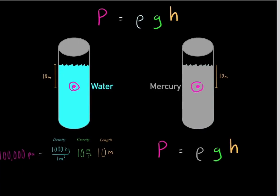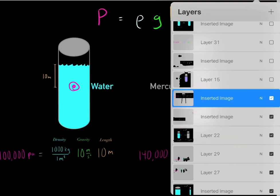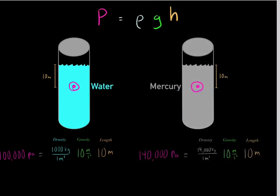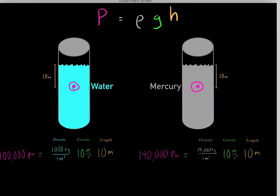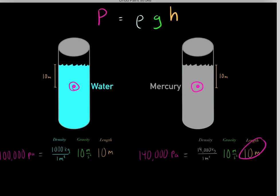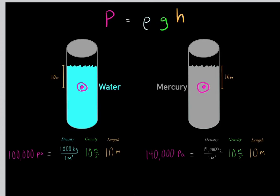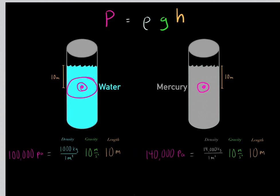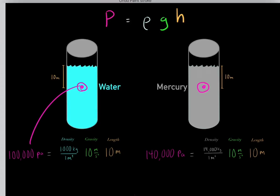What's the pressure at the point 10 meters from the surface in the mercury container? We look in a physics textbook and see the density of mercury is 14,000 kilograms per meters cubed. We plug in that density, multiply by g the acceleration due to gravity, and multiply by 10 meters, because we're interested in a point 10 meters from the surface. That gives a pressure of 140,000 pascals.